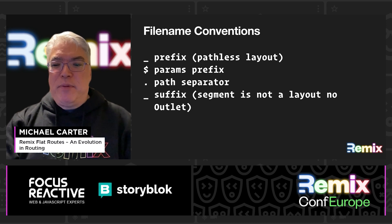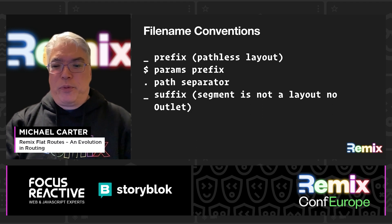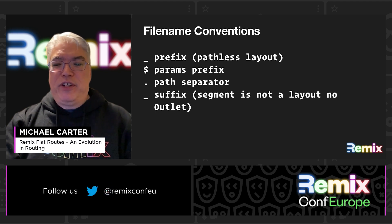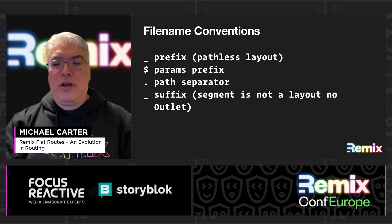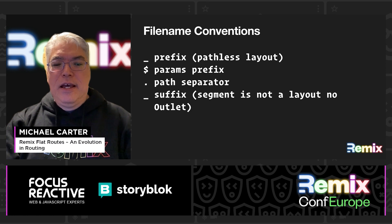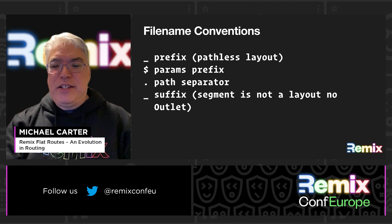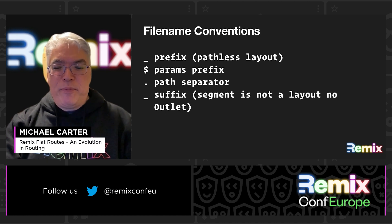Remix FlatRoutes changes some file naming conventions. For pathless layouts, use a single underscore instead of the double underscore prefix. The params prefix remains the same — the dollar sign — but I'll show you how we can change that later. Instead of using folders for routes, the file name includes the entire route, so use a dot instead of slash to separate URL segments. And to handle scenarios like our user edit route, the underscore suffix specifies that a segment is not a layout because it has no outlet.